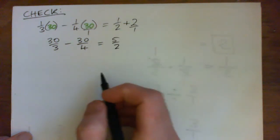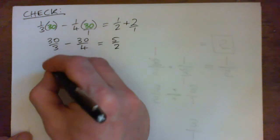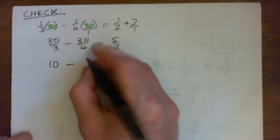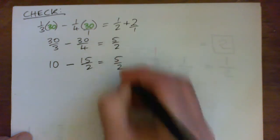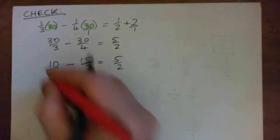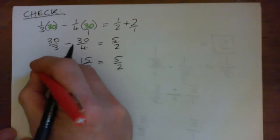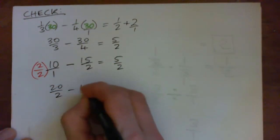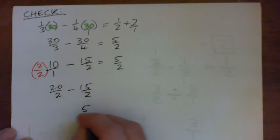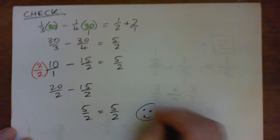This gives us ten minus thirty over four becomes fifteen over two equals five over two. That's ten over one which times by two over two becomes twenty over two minus fifteen over two which becomes five over two. So we have five over two on both sides.